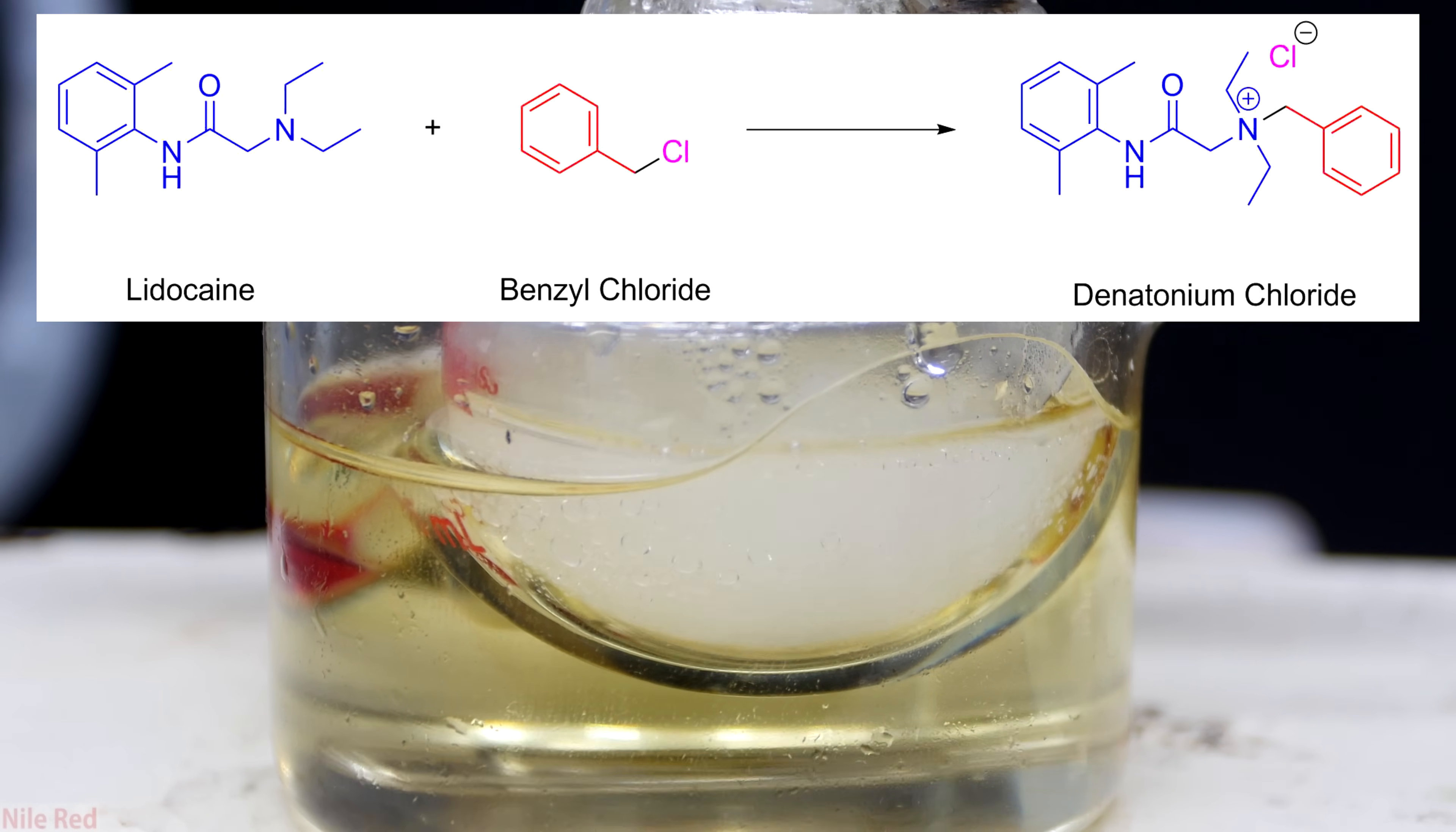So what we're doing in this reaction is we're reacting lidocaine with benzyl chloride to make denatonium chloride. If you look at the nitrogen of the lidocaine, it's tertiary because it has three substituents, but if you look at the nitrogen of the product, it's quaternary because it has four substituents. Also, the lidocaine that we're reacting is freebase, meaning there's no positive charge on the nitrogen and no counterion, but the product that we're producing is a salt. The nitrogen is charged and it has the chloride counterion.